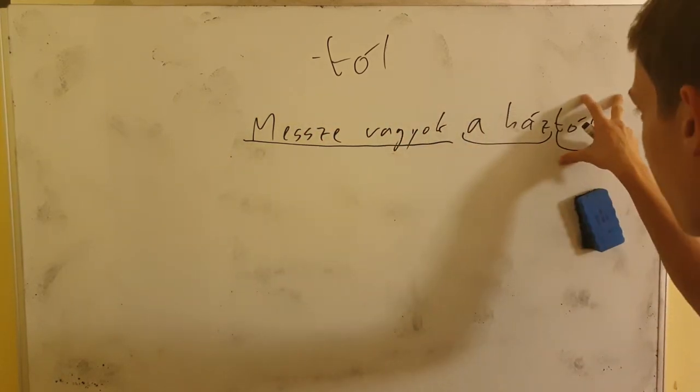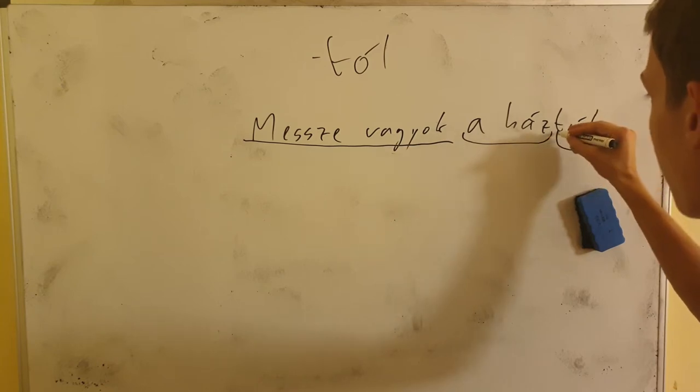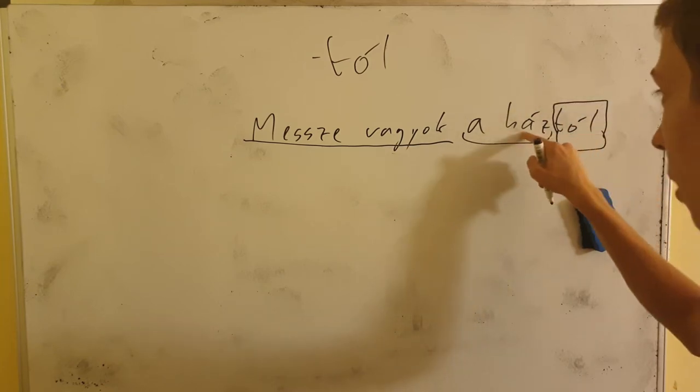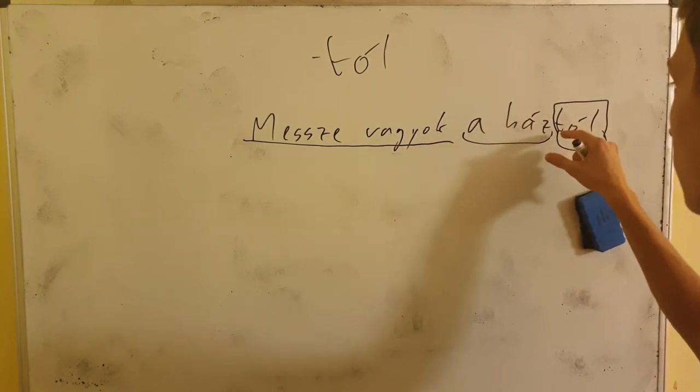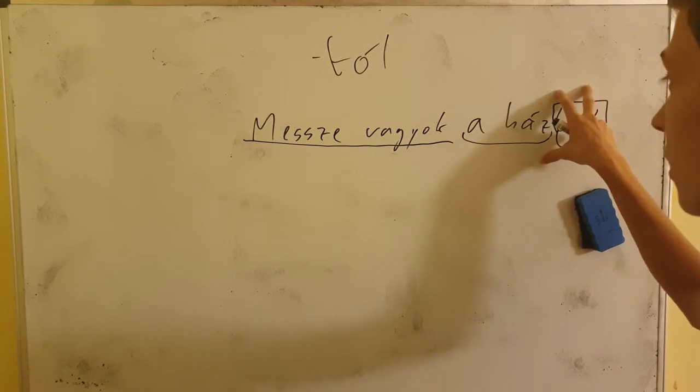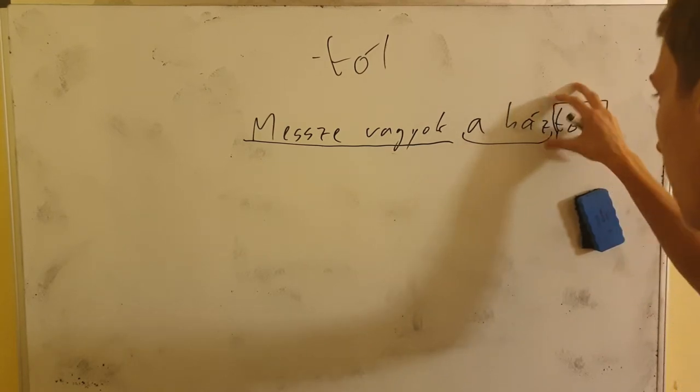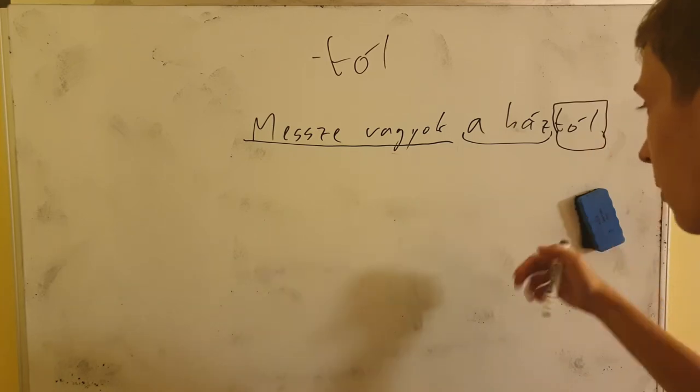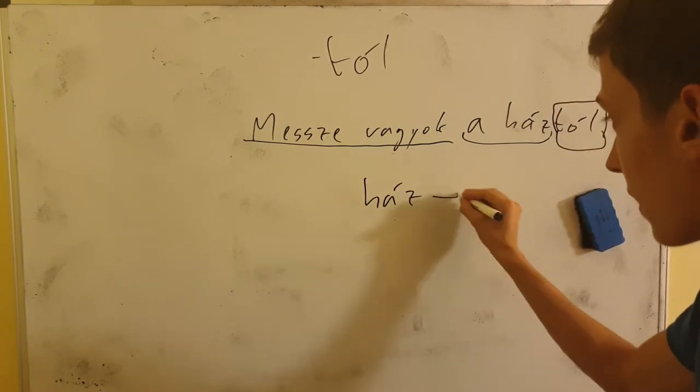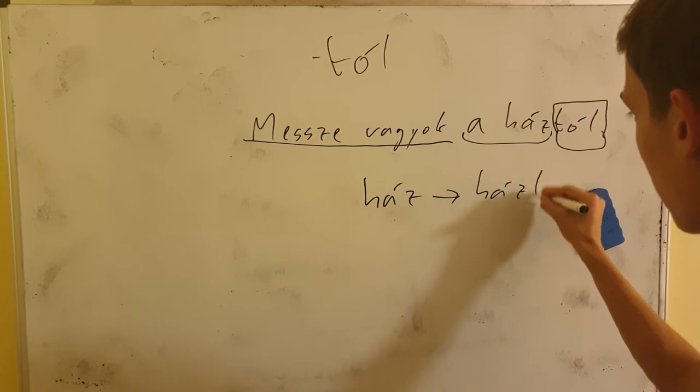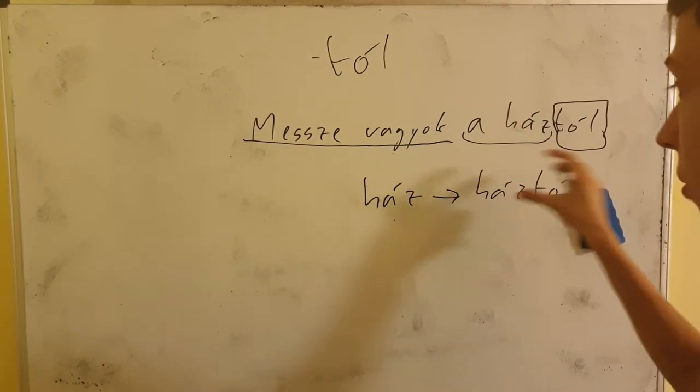Right here you have to use this suffix and attach this tol to the house word, to the has, to create far away from house out of just house. That's the entire thing. You had house, has, which means house, and you created has tol and it means from house.